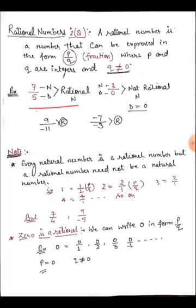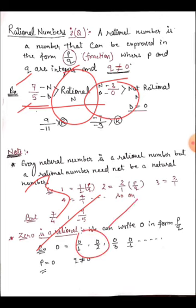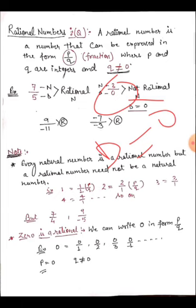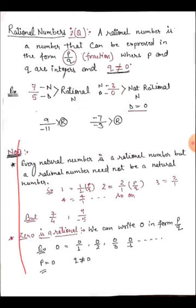Some examples: seven upon five — seven is the numerator, five is the denominator, and since five is not equal to zero, this is a rational number. But look at three upon zero — here the denominator is zero. If any rational number has a denominator of zero, it cannot be called a rational number. So three upon zero is not a rational number because the denominator equals zero.